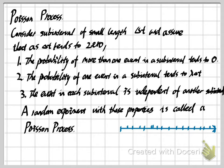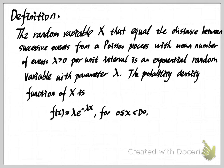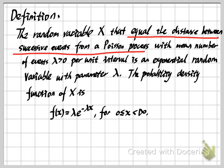So why describe this in detail? Because the exponential distribution is very closely related to a Poisson process. For the exponential random variable, it describes the distance between successive events from a Poisson process — in other words, the waiting time or inter-arrival times between customer arrivals. The Poisson random variable counts how many successes we have, but the exponential random variable describes the waiting time. In general, this is a positive number.